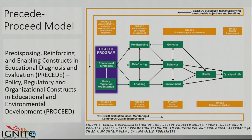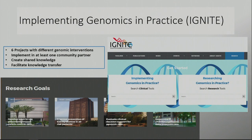Then there's this one, which is extraordinarily complicated with many pieces — it's very much an educational model called PRECEDE-PROCEED. It has eight steps: you start with the epidemiology components, then the educational and ecological, the administrative and policy, and then you come down to actual implementation, process evaluation, impact evaluation, and outcome evaluation.